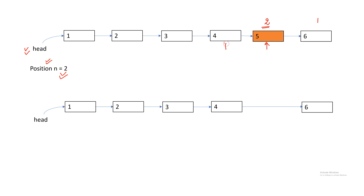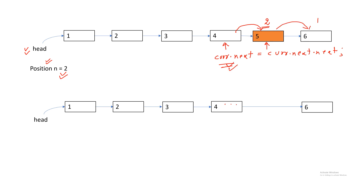First you have to reach the target's previous node — call it current. Then you do current.next = current.next.next. This makes current skip over the node to delete and point directly to the one after it. So to delete node 5 (second from end), you must reach node 4 first.